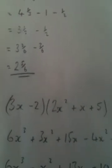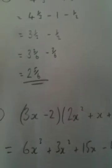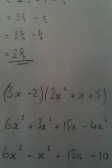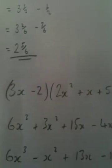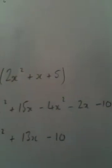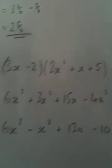We then need to tidy that up, so I have six x cubed, I have three x squared minus four x squared, that's minus one x squared, fifteen x subtract two x is thirteen x, and just minus ten on the end.